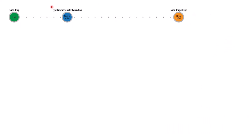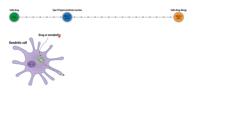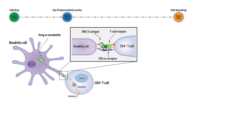Let's look at how sulfa drugs lead to this allergic reaction. It's considered a type 4 hypersensitivity reaction that is not mediated by antibodies. Rather, the drug or metabolite is taken up by a dendritic cell or antigen-presenting cell, processed and complexed with MHC type 2, and that complex is then presented on the cell membrane, where it interacts with receptors on CD4-positive T cells.